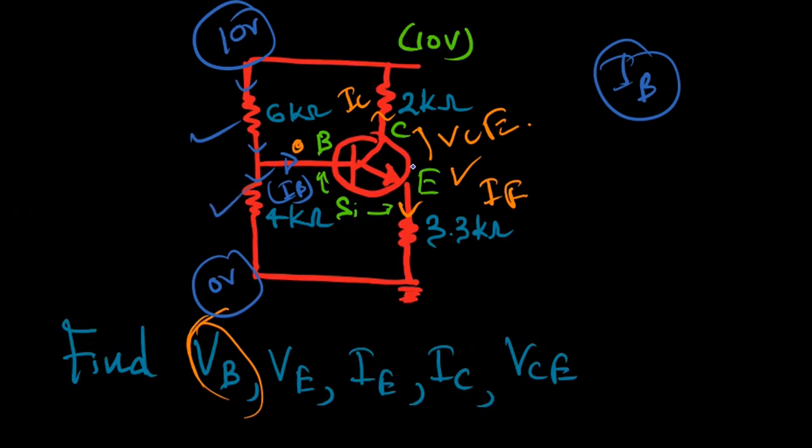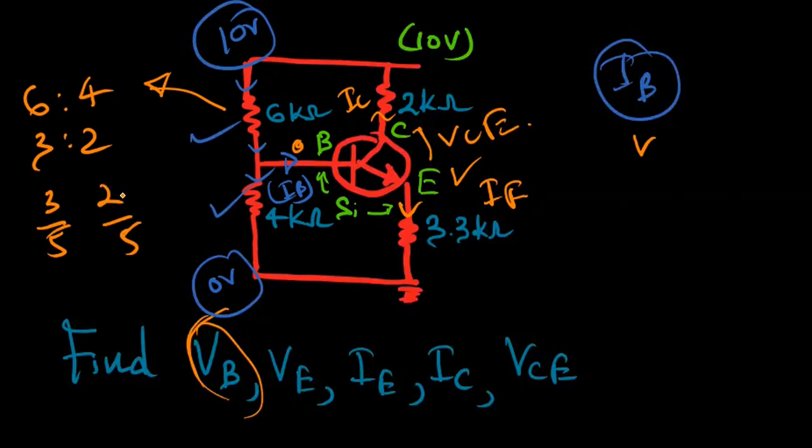We can apply voltage divider method where resistance ratio equals potential ratio. Let's take the resistance ratio 6 is to 4, simplified to 3 is to 2. Taking the fractional value, 3 divided by 5 multiplied by 10 gives us 6 volts, and 2 divided by 5 multiplied by 10 gives us 4 volts.